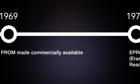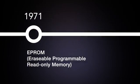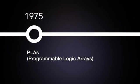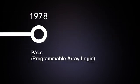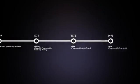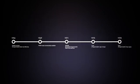This was followed quickly by EPROMs, or Erasable Programmable Read-Only Memory, in 1971, and then PLAs, Programmable Logic Arrays, in 1975, and PALs, Programmable Array Logic, in 1978. We'll explain the difference between these in this video.